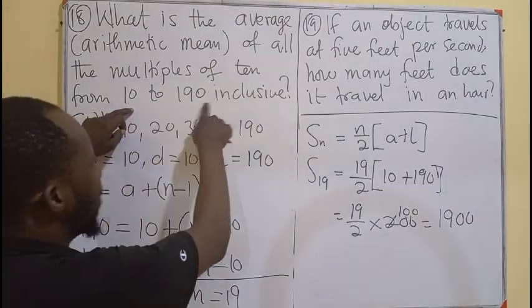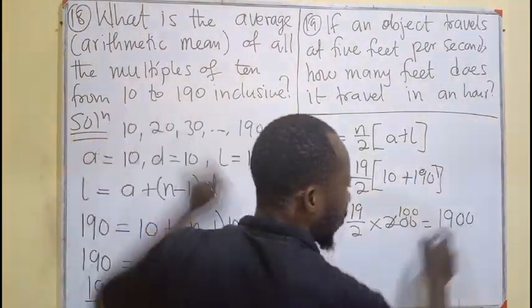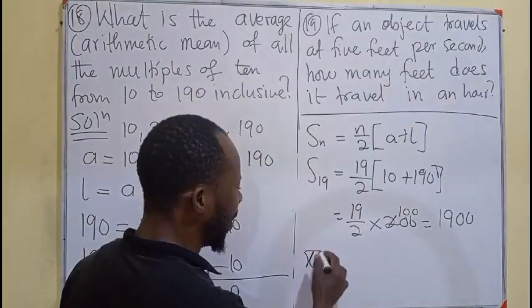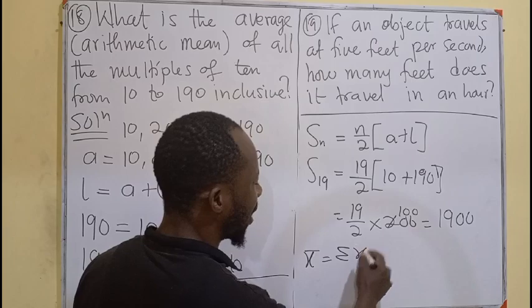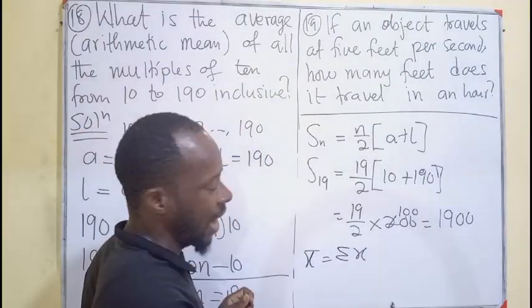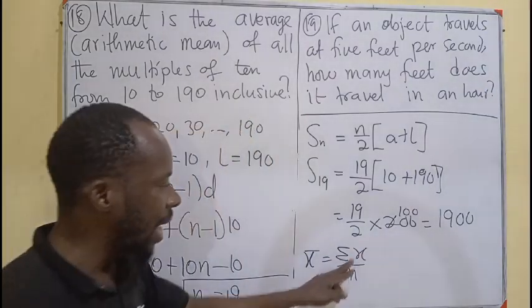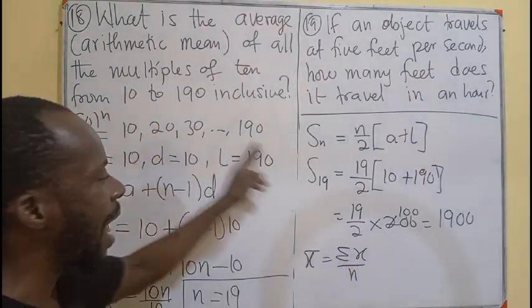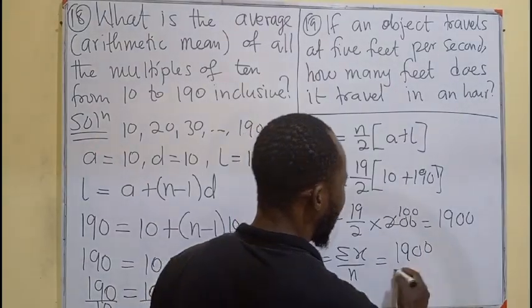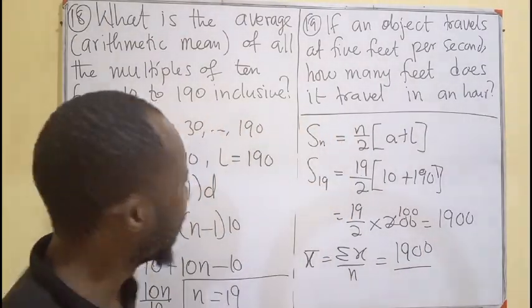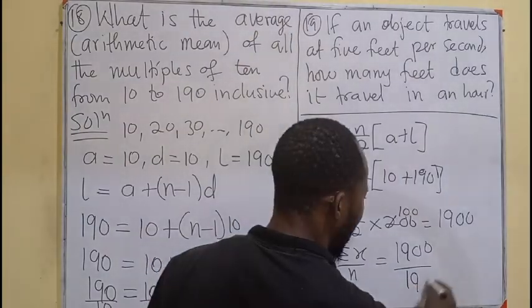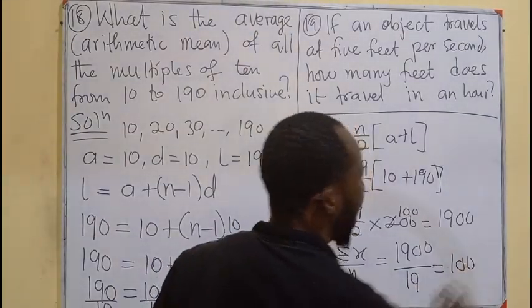But you know that a mean is sigma x over N. The x is the number of terms that we are adding, which in this case is 1,900. How many numbers are we adding? We are adding 19 of them. And that will give us 100.